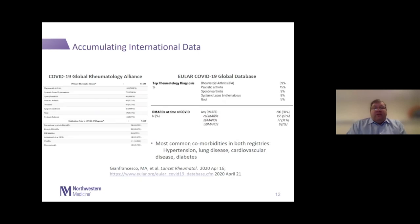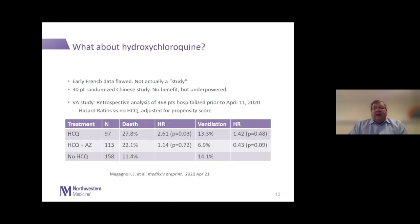We're continuing to accumulate international data. The COVID-19 Global Rheumatology Alliance is a large international database that we and other centers contribute to as patients with rheumatologic diseases develop this infection. The main takeaway is that there's a broad spectrum of patients developing infections, including systemic lupus patients on hydroxychloroquine, which raises the question of whether hydroxychloroquine is truly protective. On the other hand, we're not seeing a huge increase over what we might expect. The comorbidities seen in these patients — hypertension, lung disease, cardiovascular disease, diabetes — are the same ones seen in the general COVID-19 population.